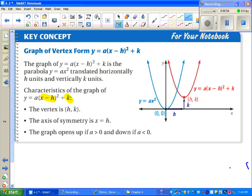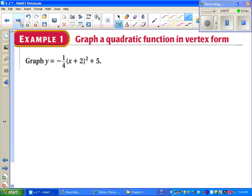Let's take a look at an example. This is graph Y equals negative 1 fourth X plus 2 squared plus 5. The first thing we'll do is identify our vertex.